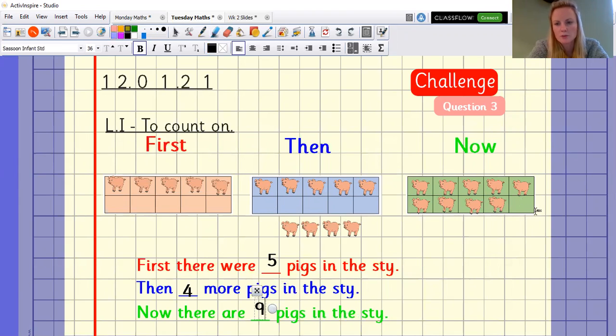So now just double check it. 10 would be if the frame was complete, but there's one missing. So 10 minus one equals nine. So that's how you can double check your work. Well done.